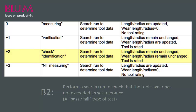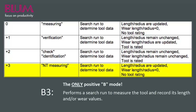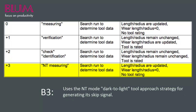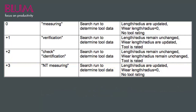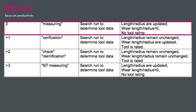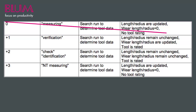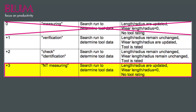Lastly, we see B3, the only positive B mode that instructs the control to perform an NT search run measurement. This mode uses the NT mode methodology for measurement — shading of the laser beam from dark to light — without tool dimension data. Although B0 may be the default B mode in Bloom's laser programming, Bloom technicians will always recommend that B3 be the mode of choice for most tool measurement cycles.